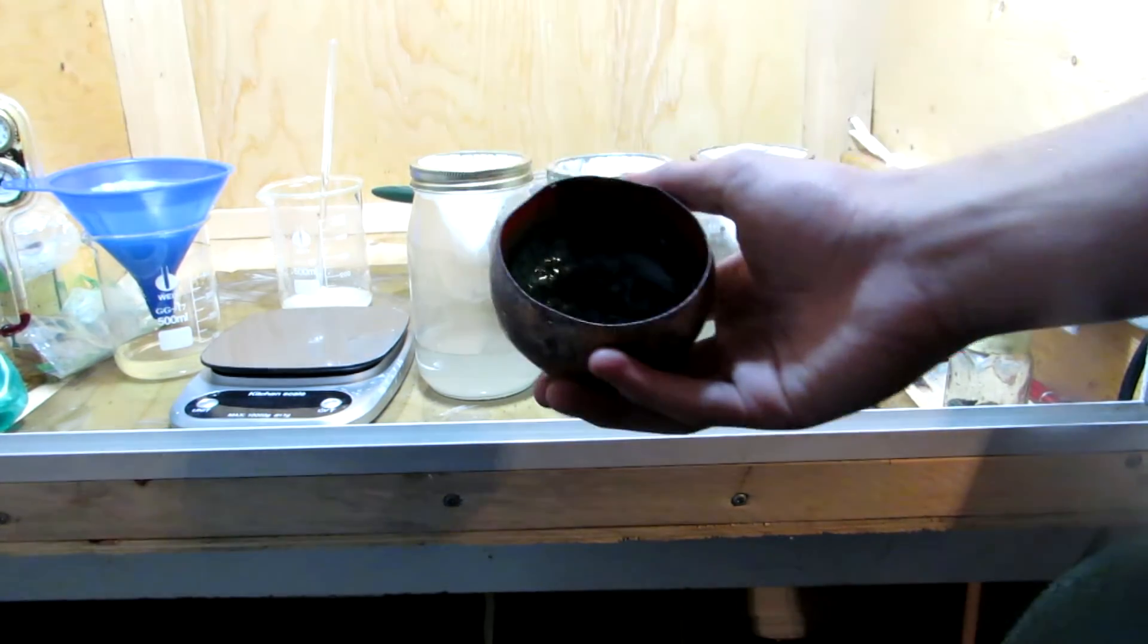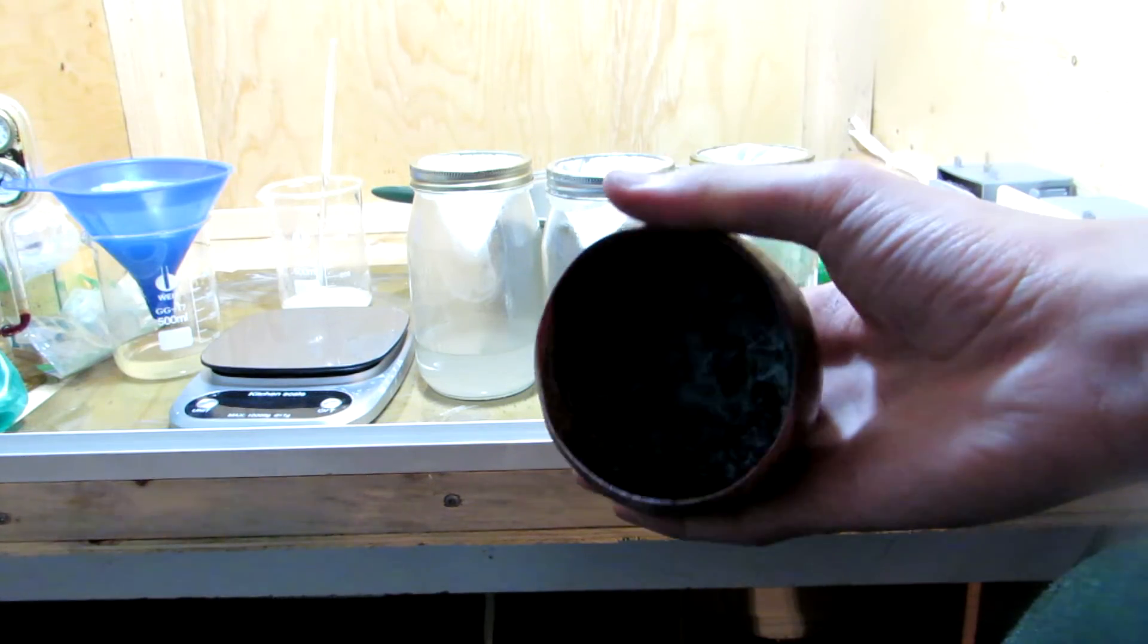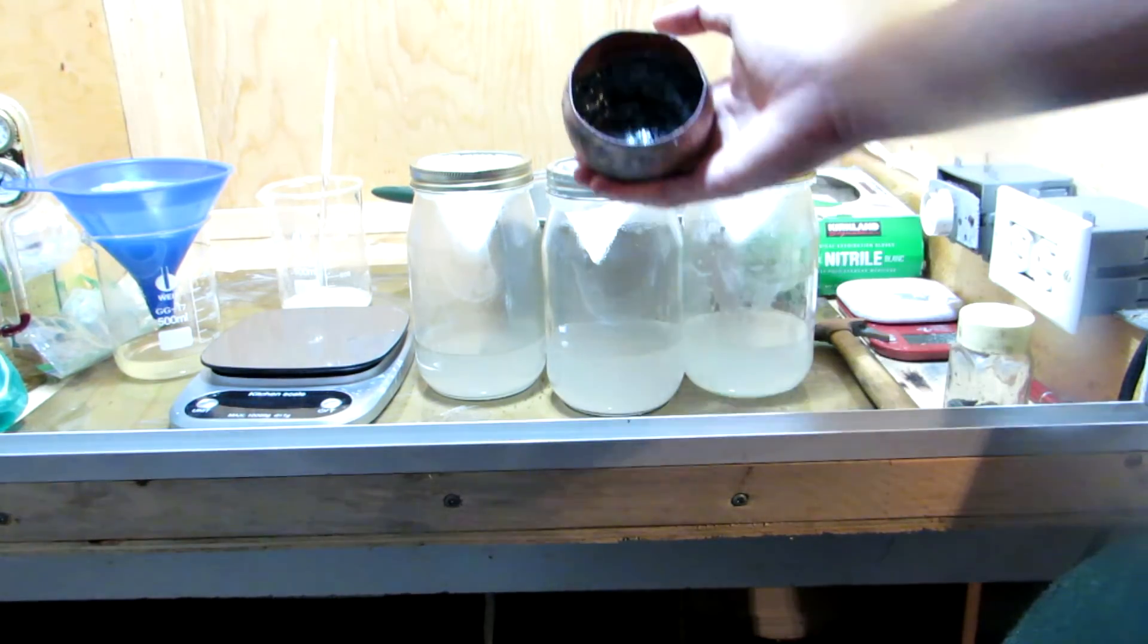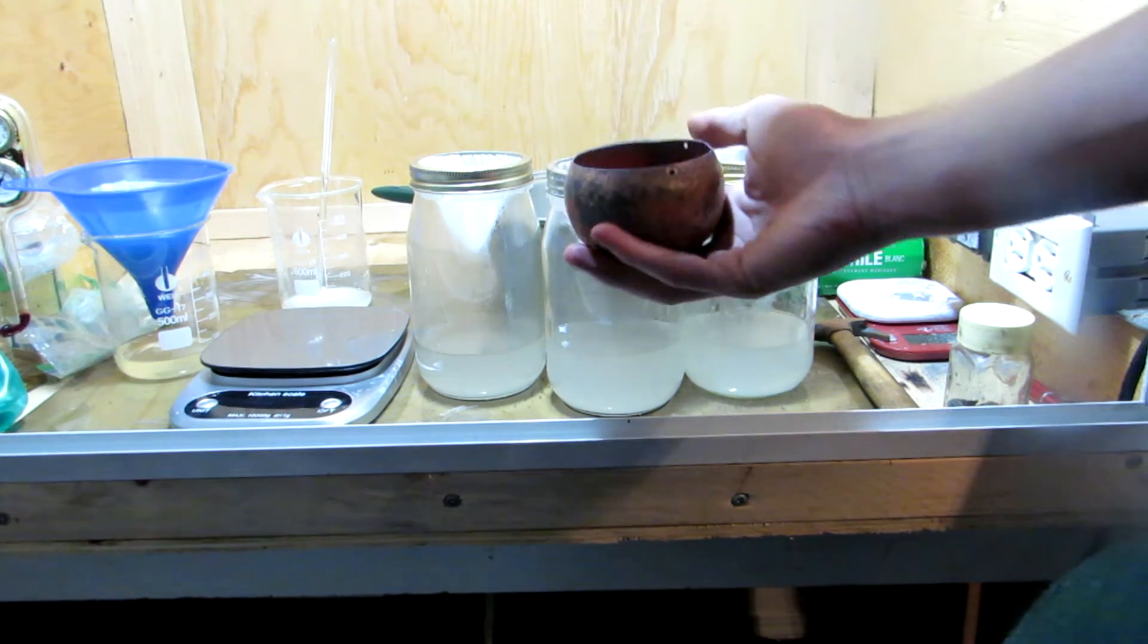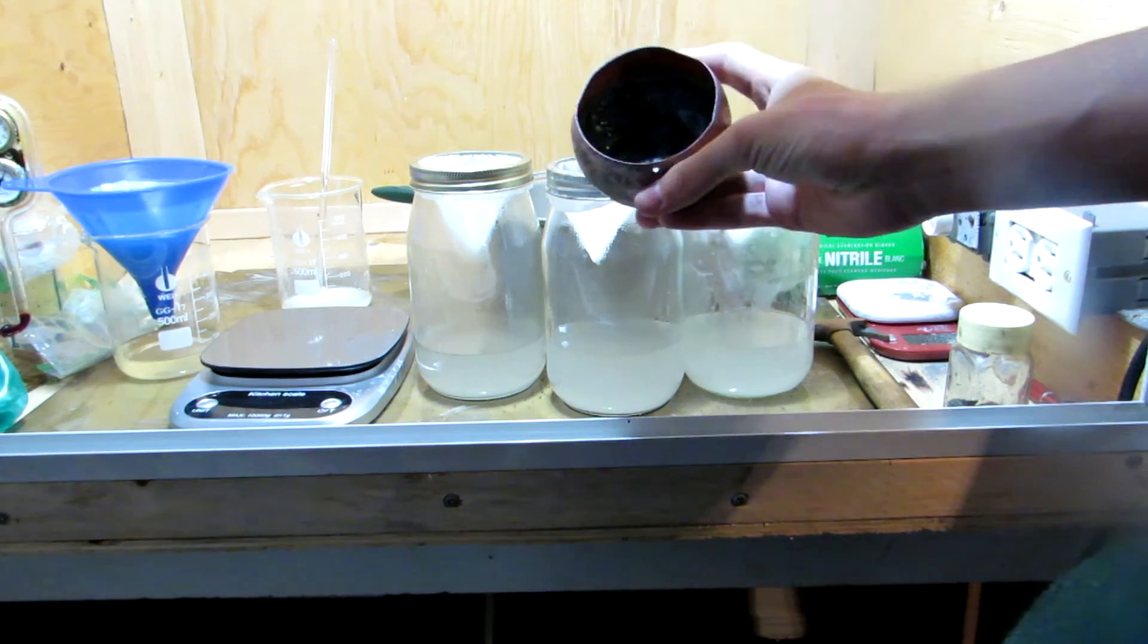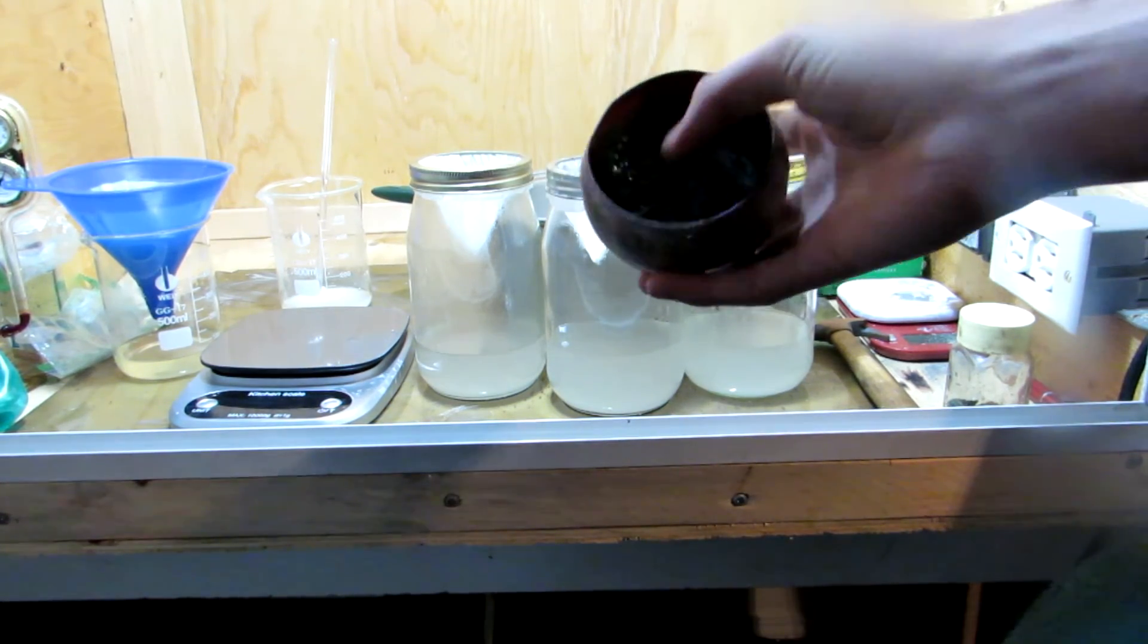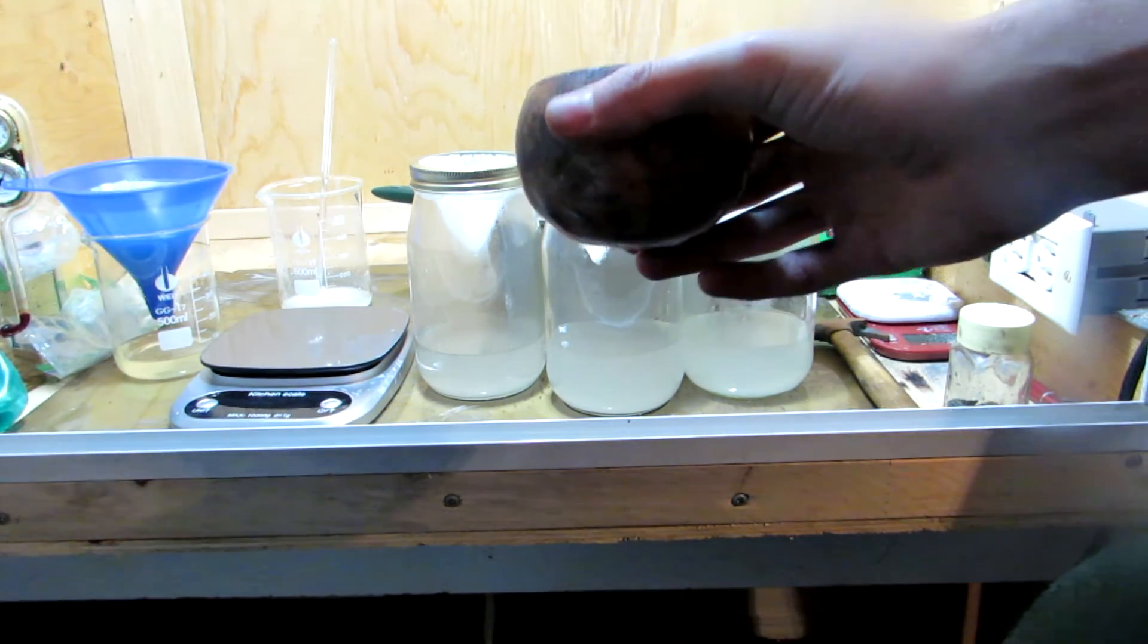Now, unfortunately, I was not able to find the footage of me using the blowtorch to heat this up. I'm not sure where that went, but you can see that after heating it up fully to decomposition, it's glassy and green. If you were to do this in a rigid steel vessel or something, it could be fairly challenging to break out, so doing it in this thin copper dish just makes it easy to smash apart and break into smaller chunks.